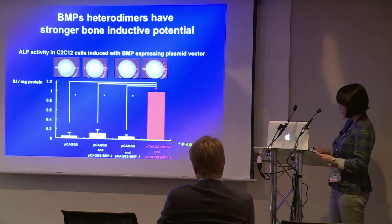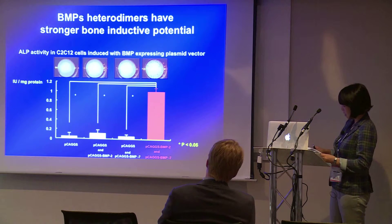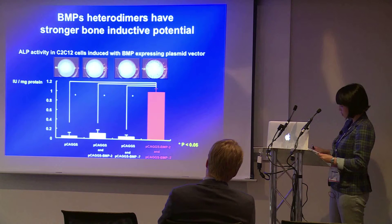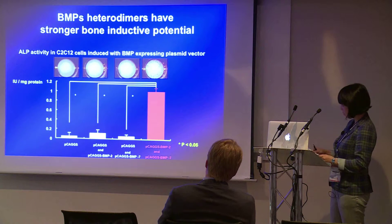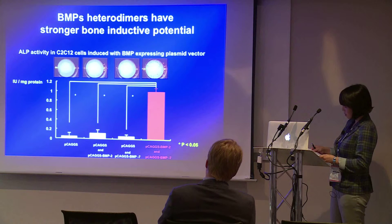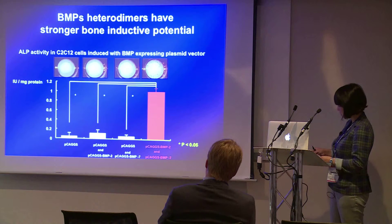For clinical application, it would be worthwhile to improve the method to enhance bone formation at the intrinsic level of osteoinductive activity. It is well known that heterodimers of the BMP family — BMP2 and BMP7 — have stronger bone inductive potential than homodimers.